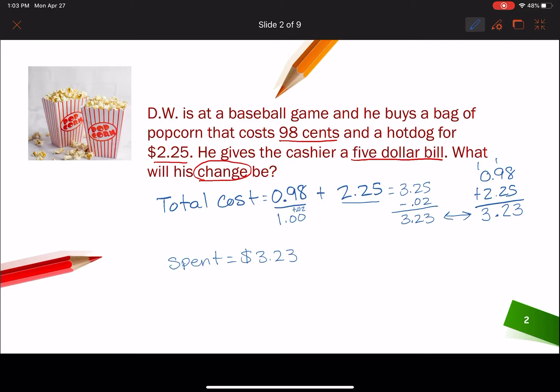And we know he gave the cashier a $5 bill. So now I want to know what the change is. So I've got to figure that out. So if he gave a $5 bill and he is only spending $3.23, we need to do a subtraction problem and find out what the change is.